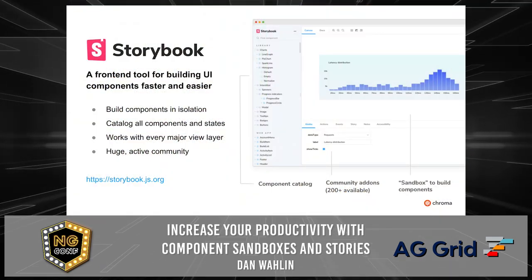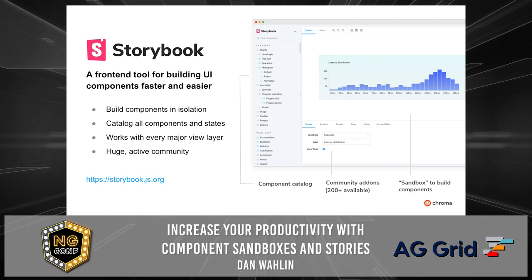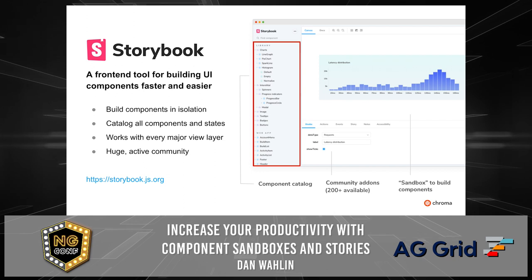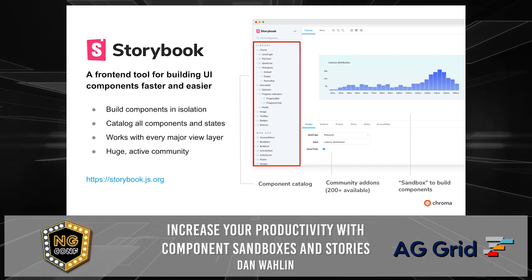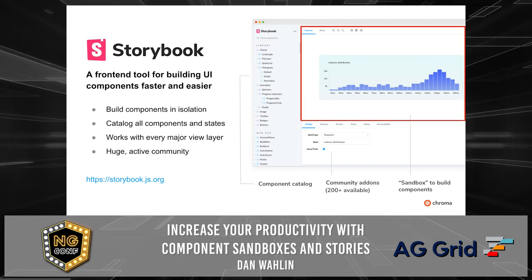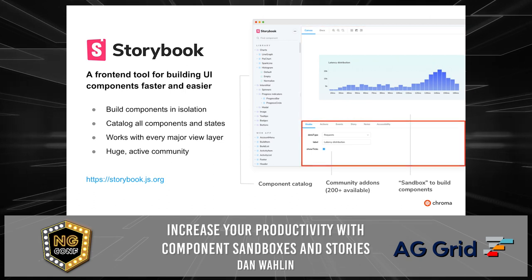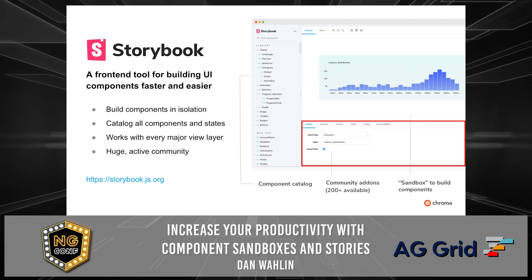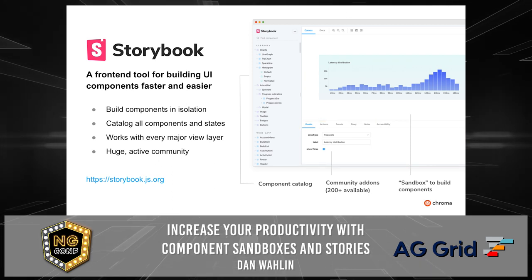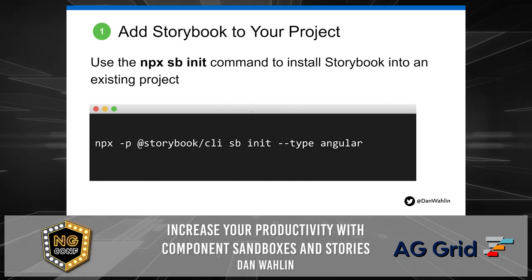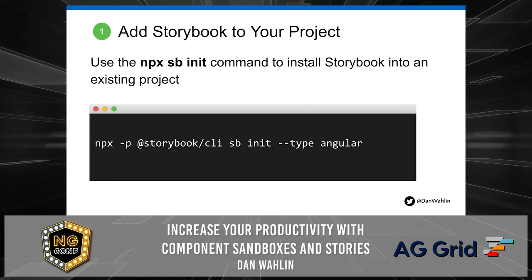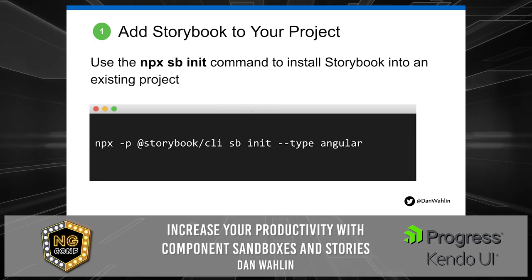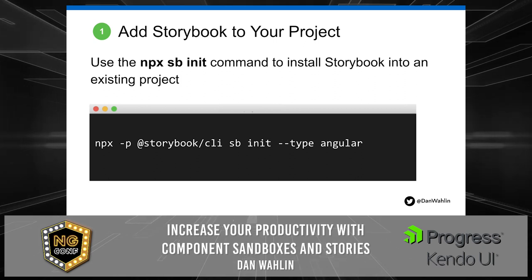Storybook gives you a bit more of a UI — it's basically a web app. On the left you'll notice charts and some other things — these are categories for different components you can run in isolation. You get a component catalog on the left, your components in the middle, and on the bottom they have a ton of what they call add-ons. You can add controls where you can actually tweak input properties right in the browser and see how that affects the component. To get started, run the `npx -p @storybook/cli` command and initialize it with `--type angular`. Storybook works with many frameworks — React, Angular, Vue, and others.